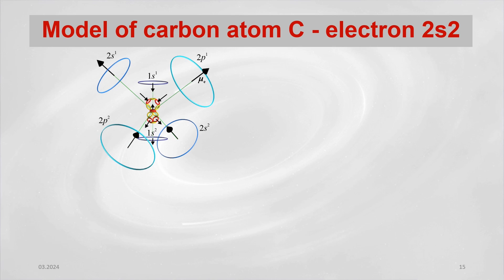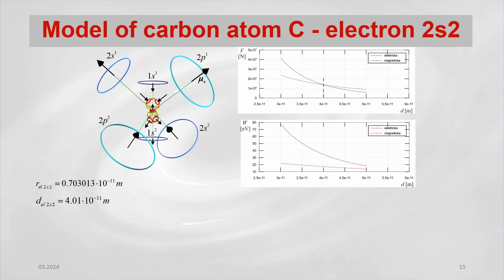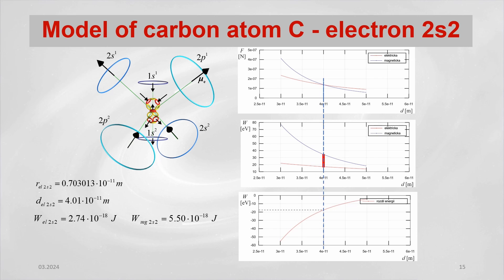We can do the same calculations for a 2s type electron. We can determine its radius, bond length, and binding energy. From the calculated values, we can see that the type 2s electron is located closer to the nucleus of the atom and has more binding energy than the type 2p electron. Again, the calculated value corresponds to the experimentally measured value of the bond.